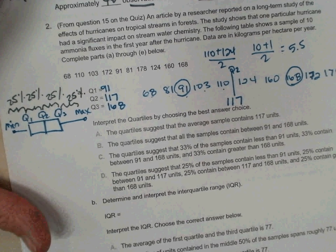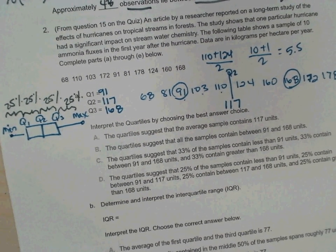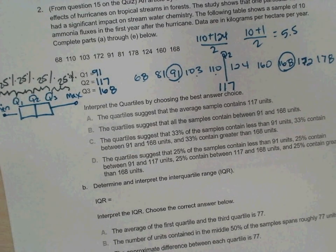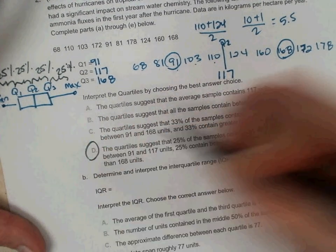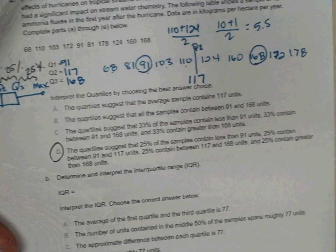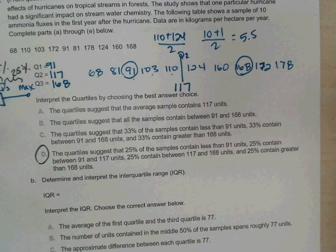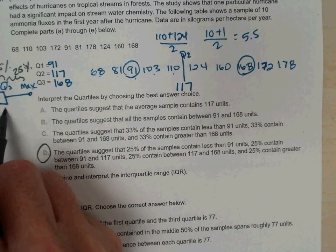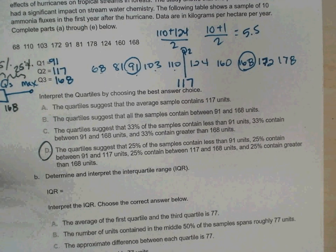They're called quartiles. So each one between any two numbers is 25 percent of the data. Based on that information, the interpretation becomes fairly clear. What would the interpretation be? The quartiles suggest that 25 percent of the samples contain less than 91 units, 25 percent contain between 91 and 117 units, 25 percent contain between 117 and 168 units, and 25 percent greater than 168 units. Thanks. Excellent.